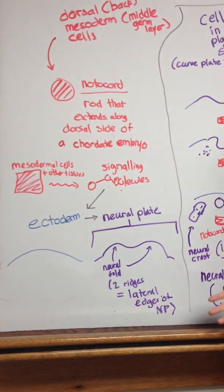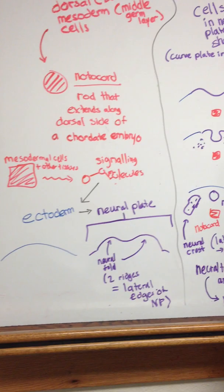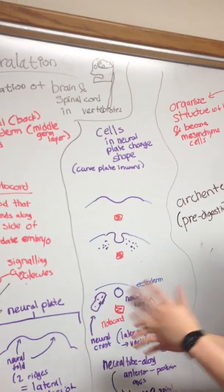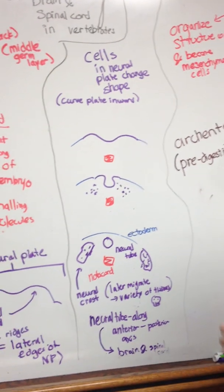The neural plate consists of two neural folds, which are the two ridges that form the lateral edges. We can depict this ectoderm to neural plate transformation in this series of illustrations.